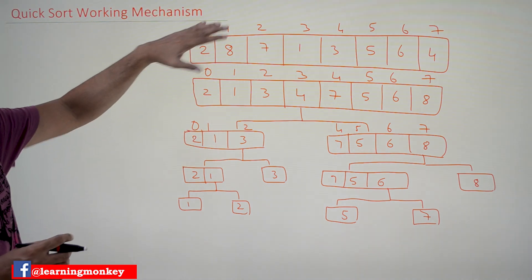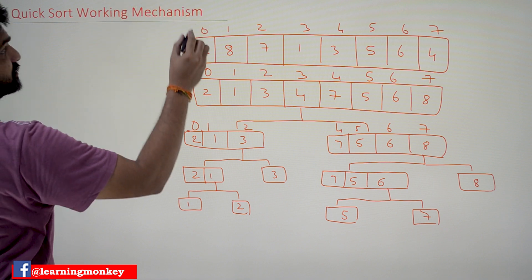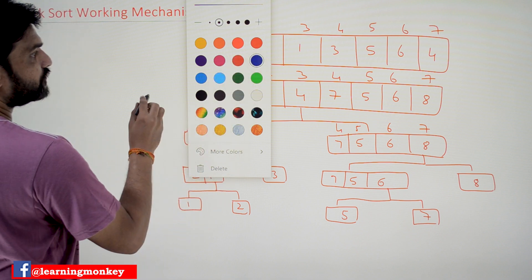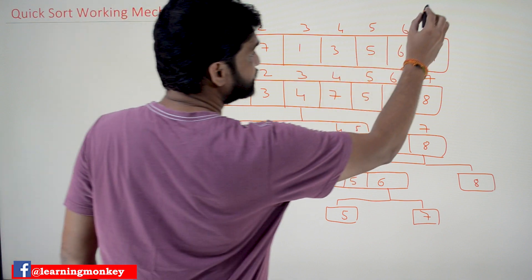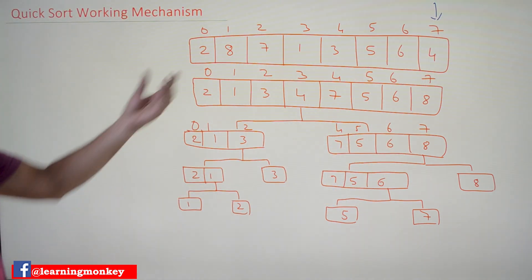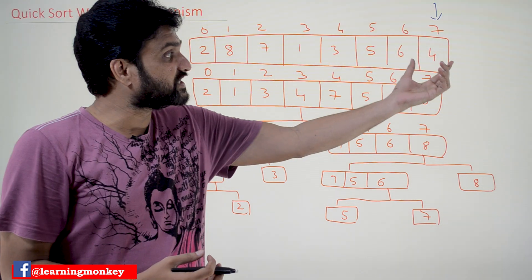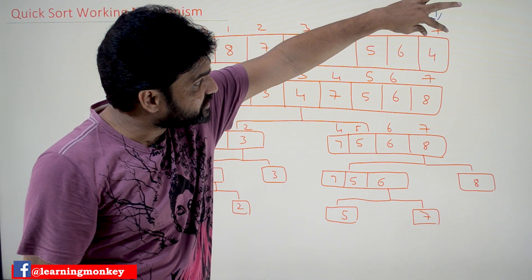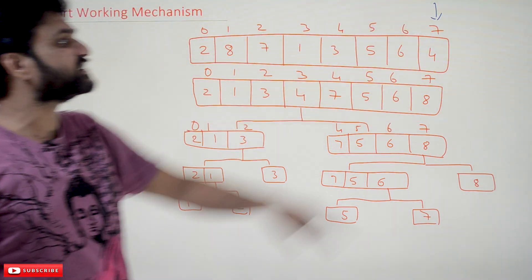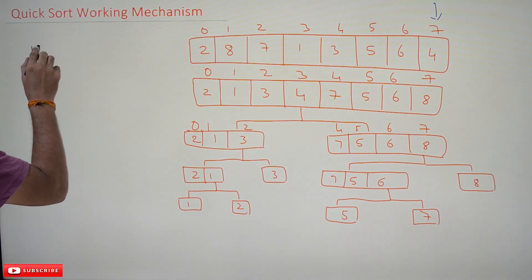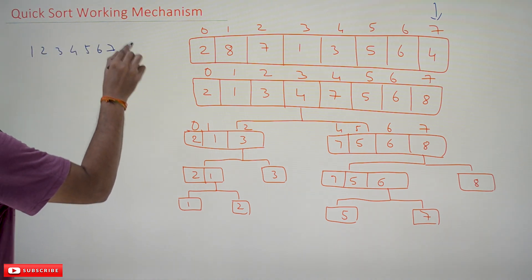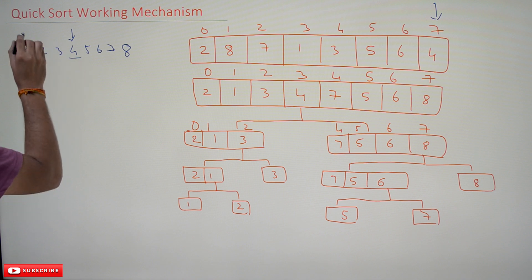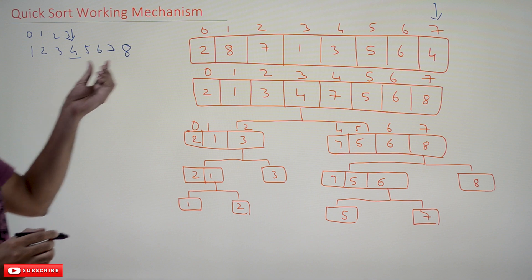Let's understand the working mechanism in detail with an example. We will consider this array and use the last element as the pivot element — some algorithms use the first element, but in our algorithm we use the last element. The partition algorithm will shift this last element into its correct position. If you arrange all elements in sorted order, they become 1, 2, 3, 4, 5, 6, 7, 8. The index for four is three (zero-indexed: 0, 1, 2, 3).